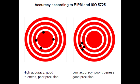Precision is the consistency and reproducibility of a test, indicating reliability, with absence of random variation. Random error reduces precision; high precision means lower standard deviation. Accuracy is the trueness of test measurements, indicating validity, with absence of systematic error or bias. Systematic error reduces accuracy.